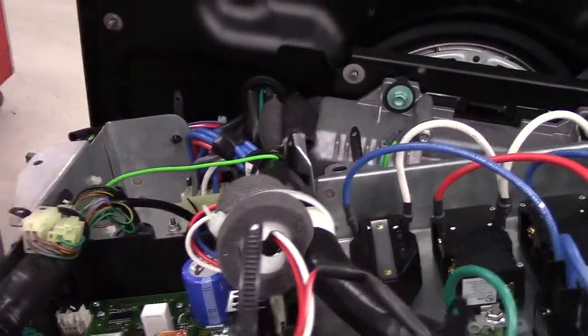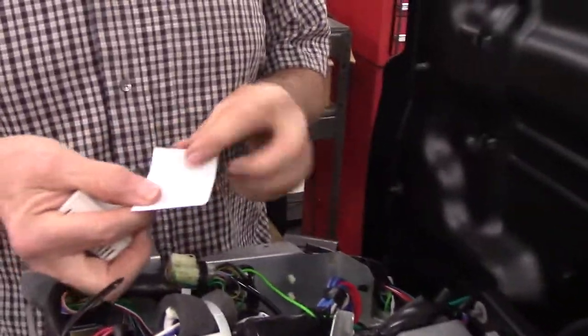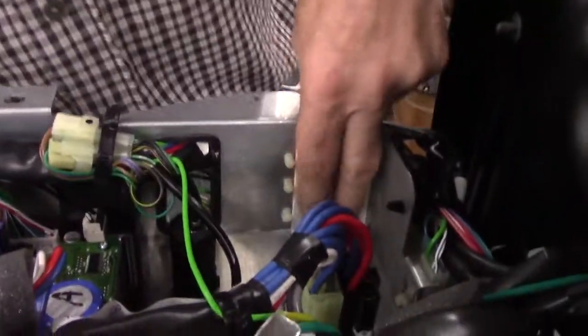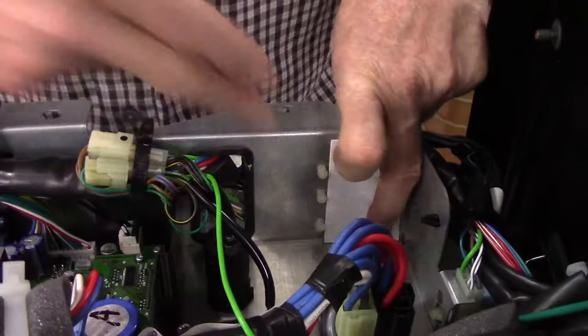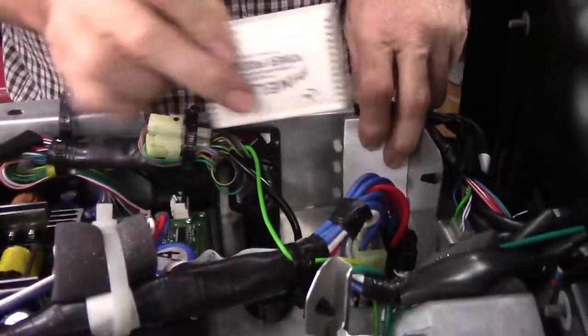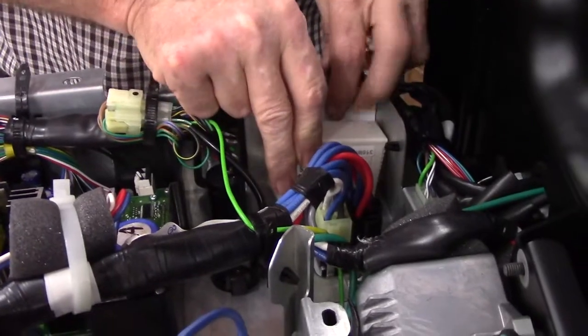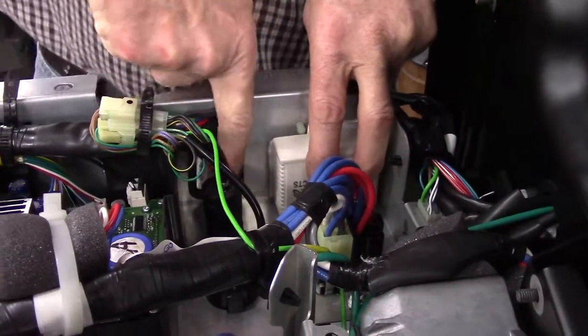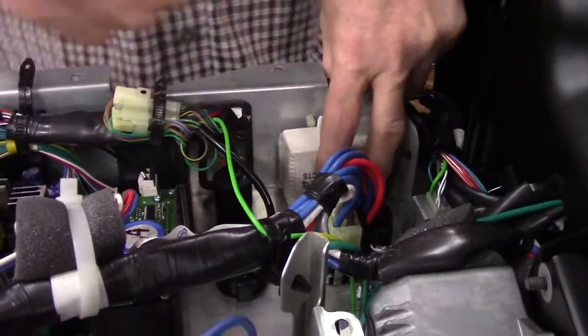You can take the velcro and stick it right here by these three wire retainers and mount the box right here with the wiring harness coming up and around the ignition switch.